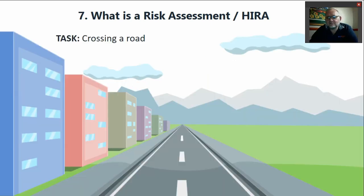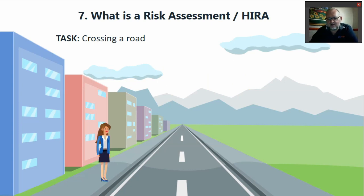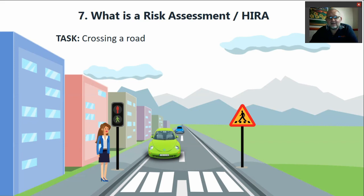Have you ever crossed the road? Was your task to cross the road? What do you do? Firstly, you stand on the side of the road. Then you're looking up and down. What are you looking for? You're looking for vehicles, and then you're going to look for a safe place to cross — the crossing robot, zebra crossings, and the signage — and then when it is safe, you're going to cross.